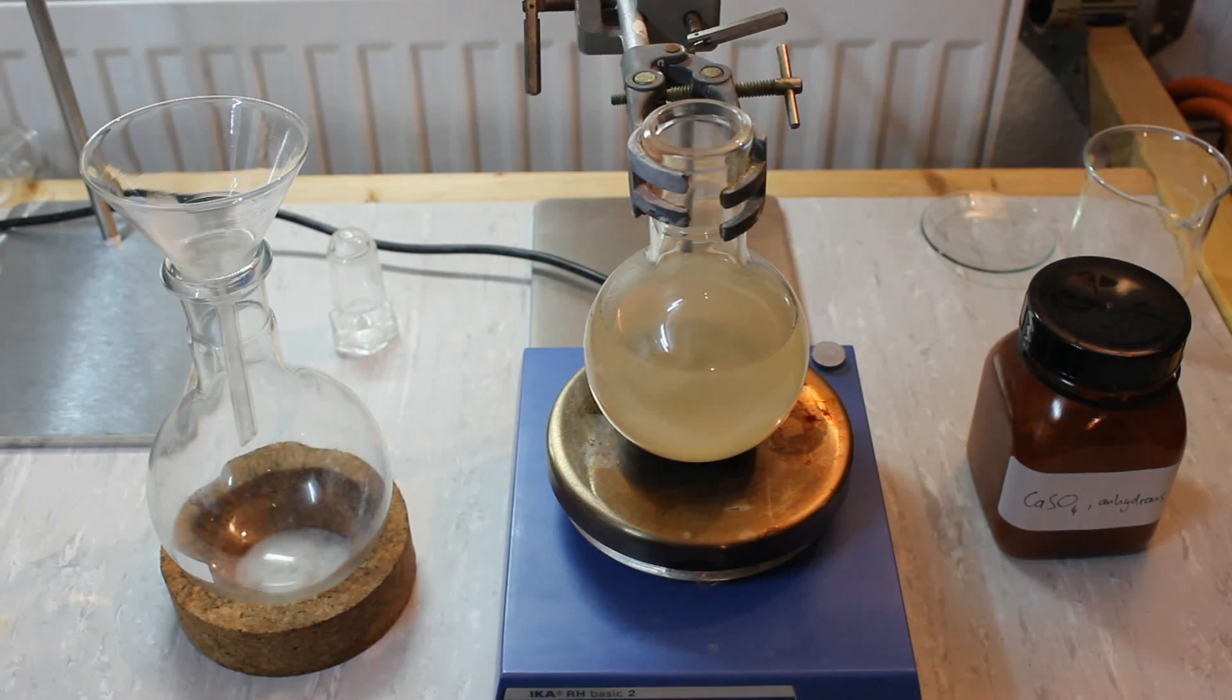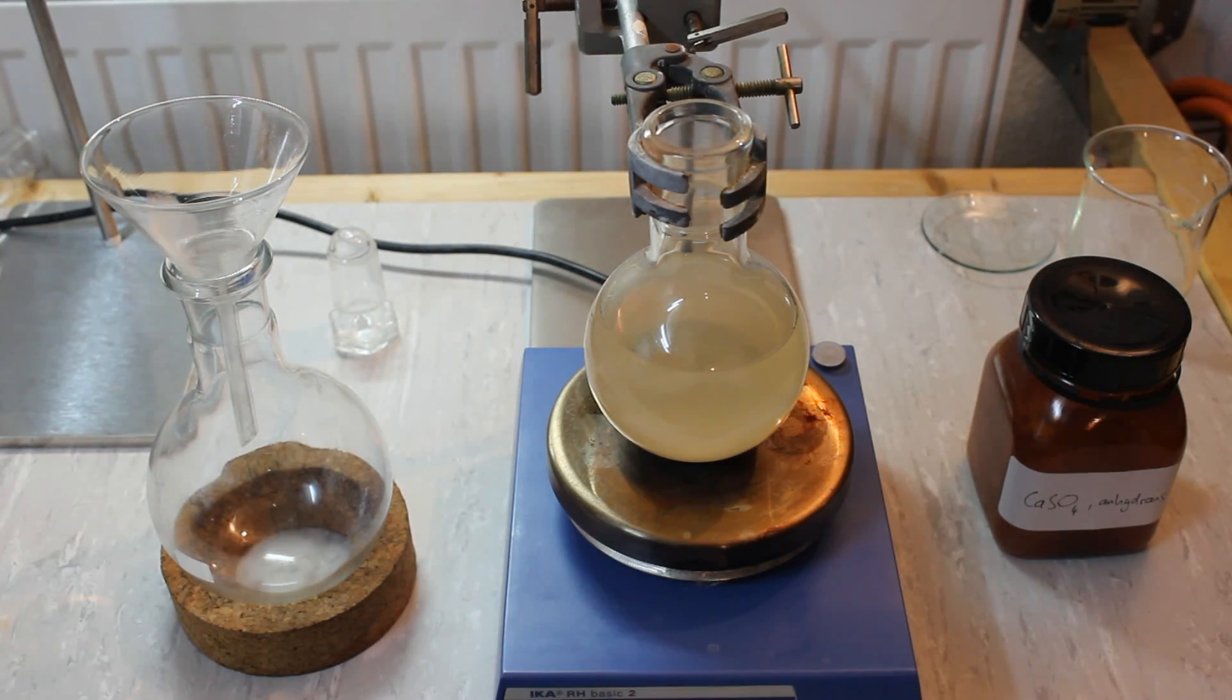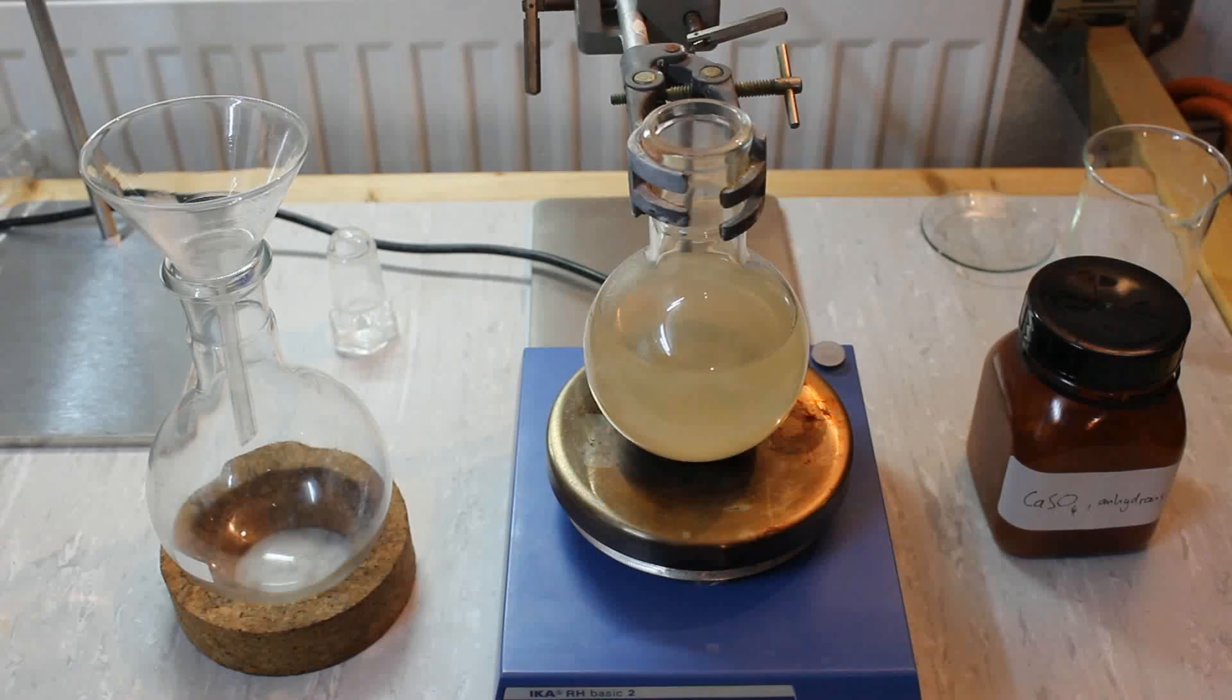I now transfer the acetone into a bigger flask so we can distill it. I'll try not to get too much of the calcium sulfate in there, but it doesn't really matter since we are going to add fresh calcium sulfate anyways.